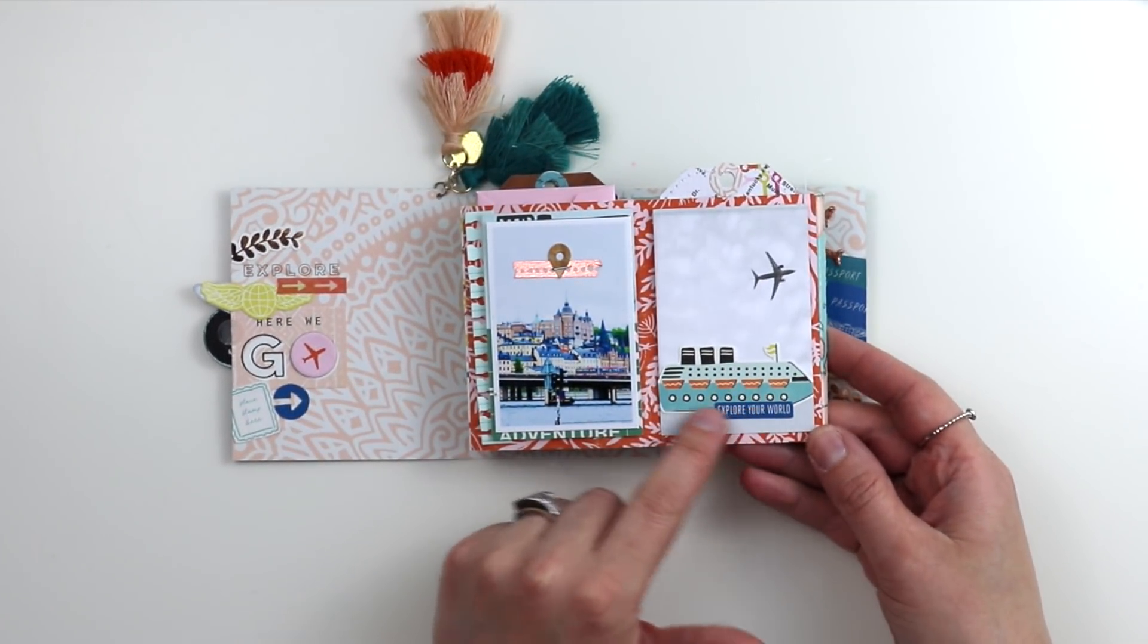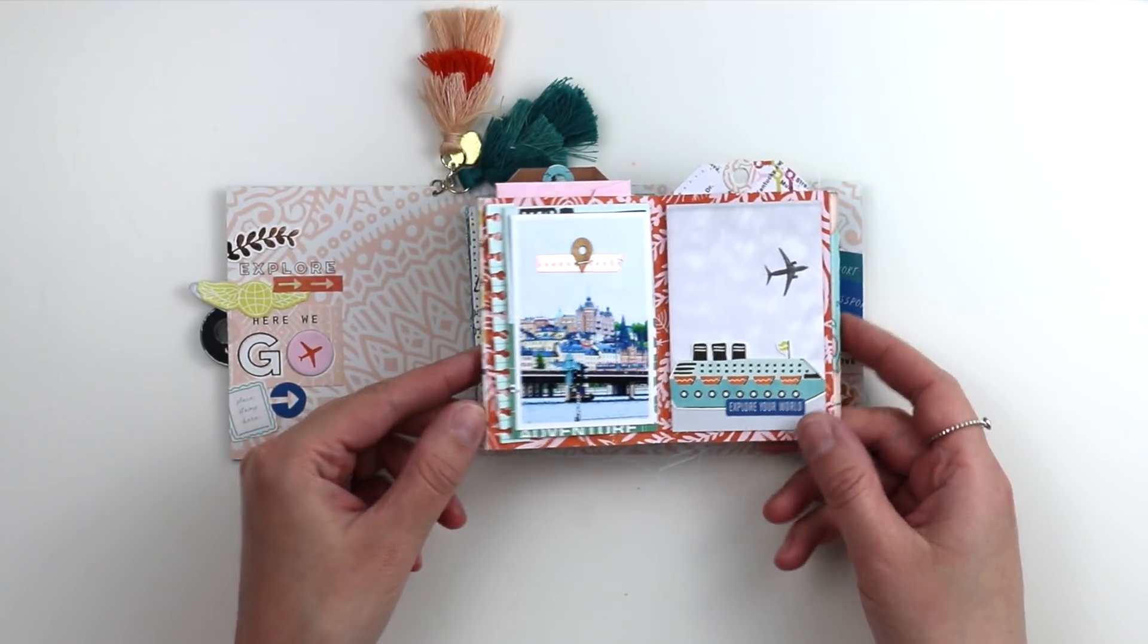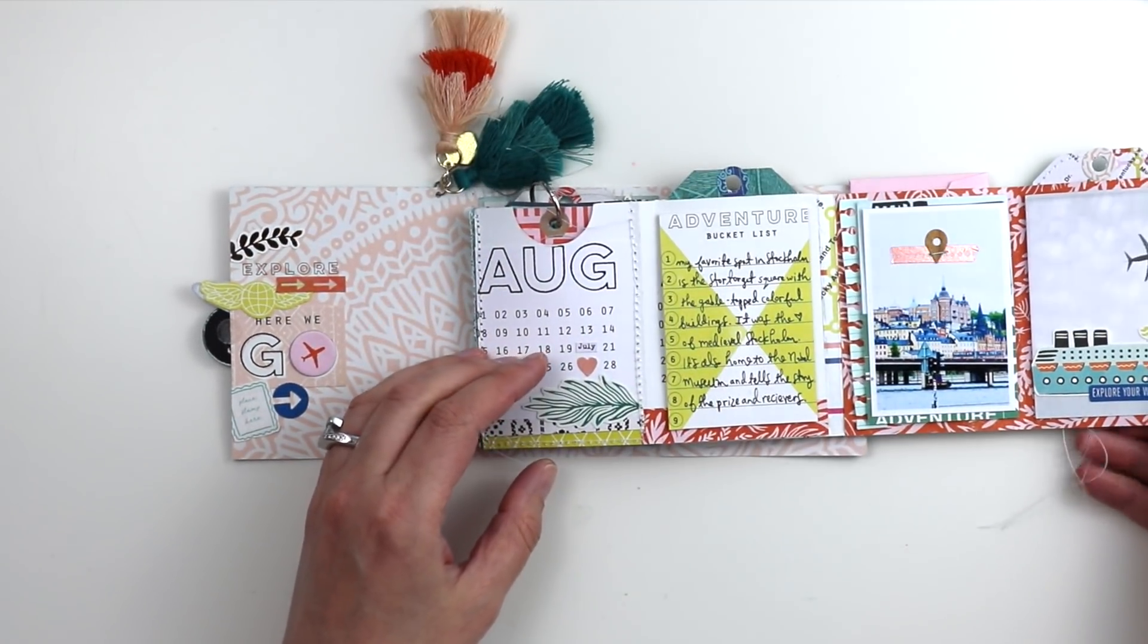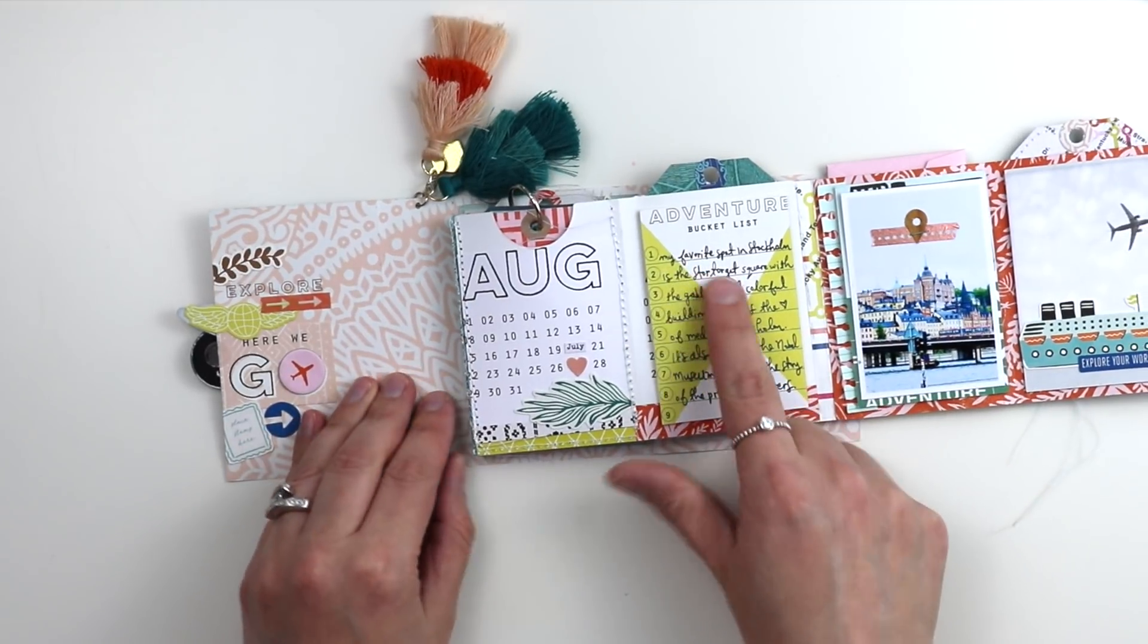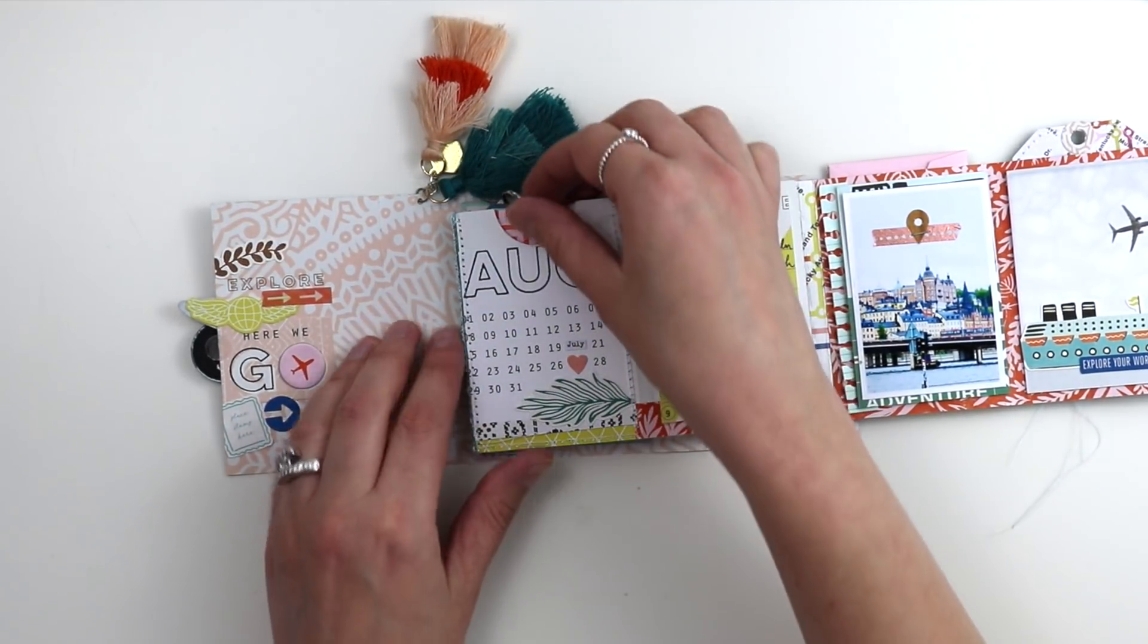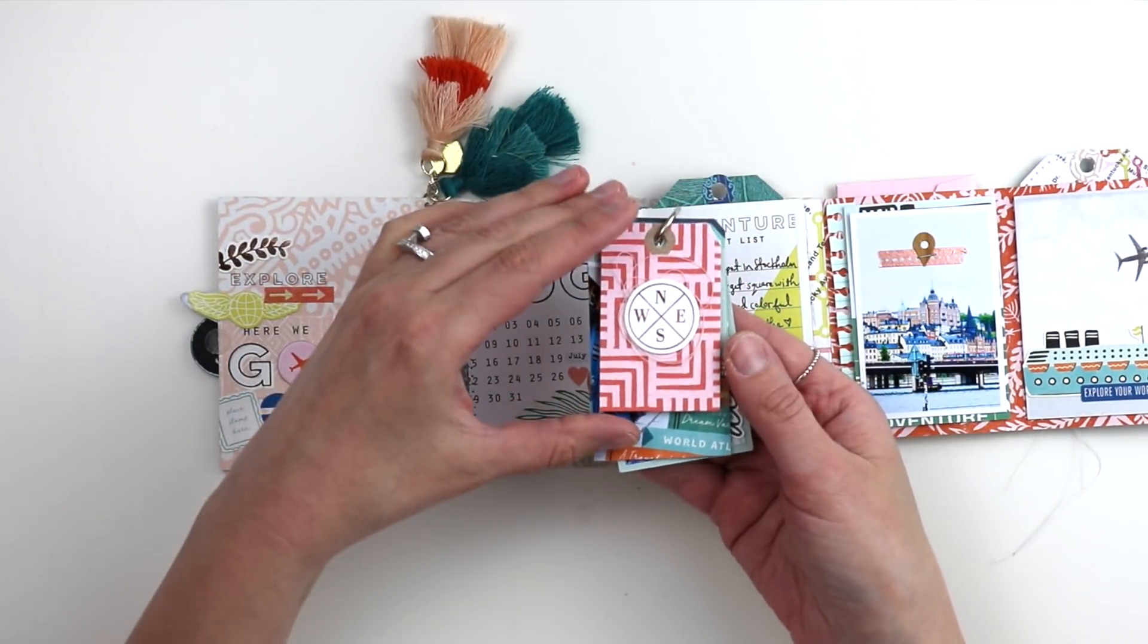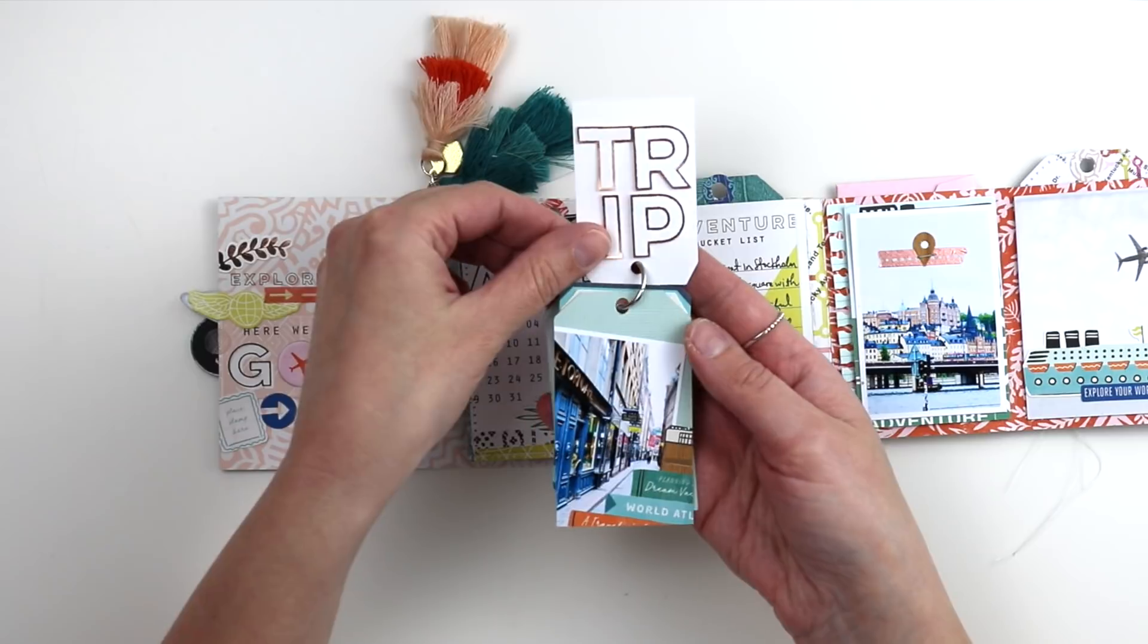We went to Stockholm on a cruise and there's a cruise ship sticker in this collection, so it fit perfectly right there. A photo with some washi tape and geotag sticker stapled on top. Here's where I wrote that journaling. Inside this pocket is a little tag mini album.